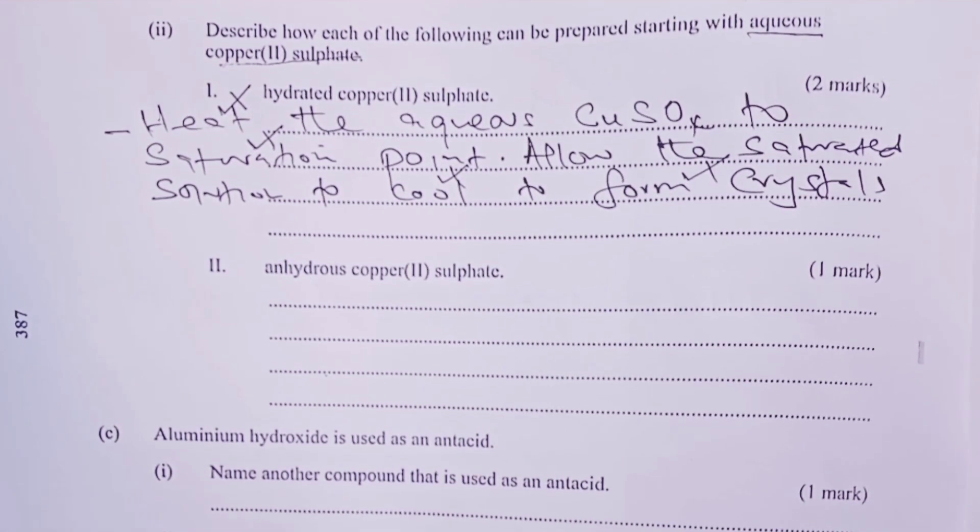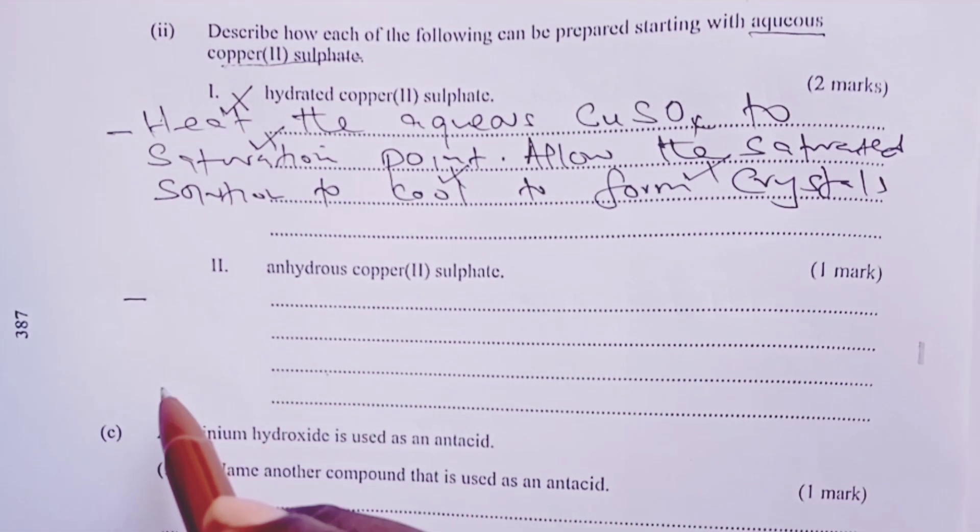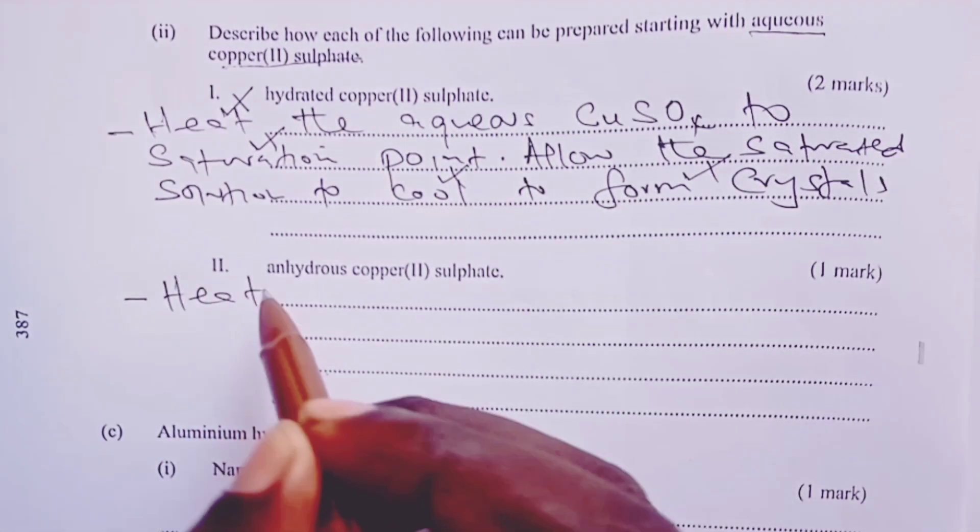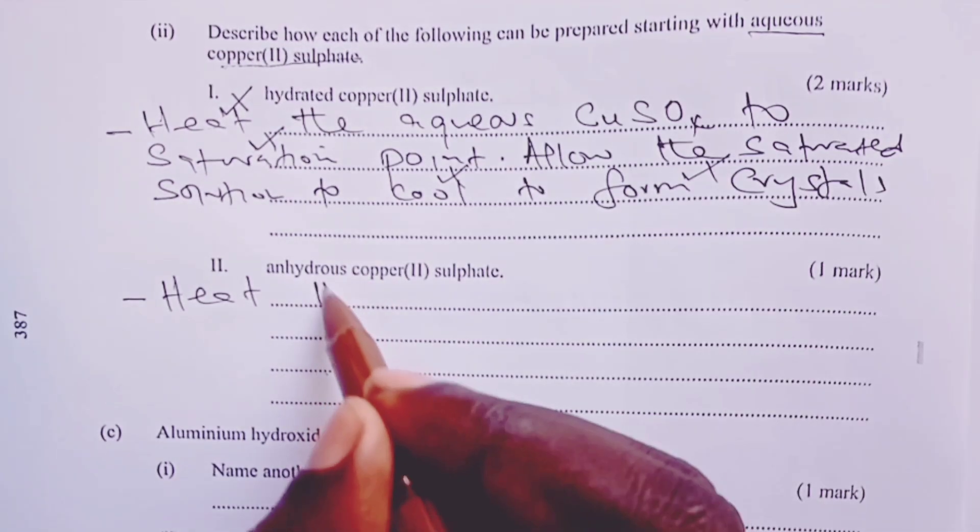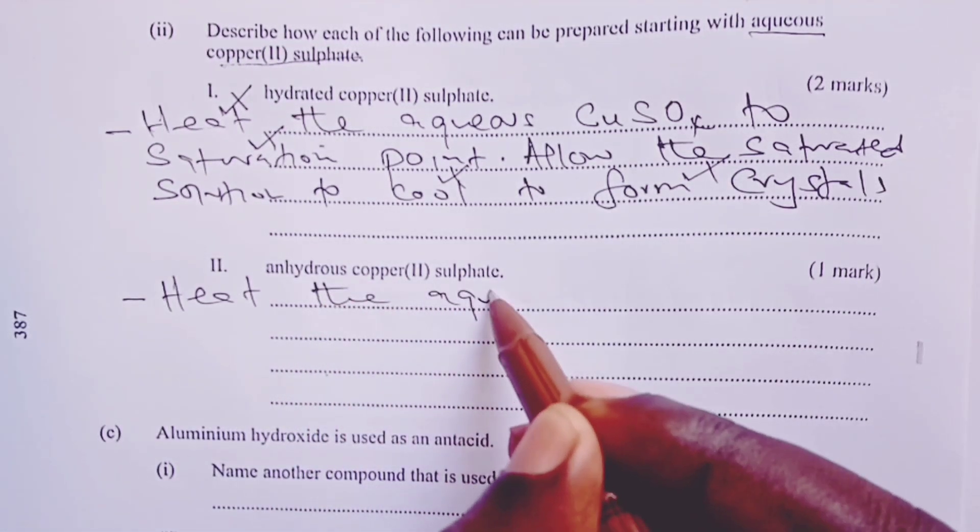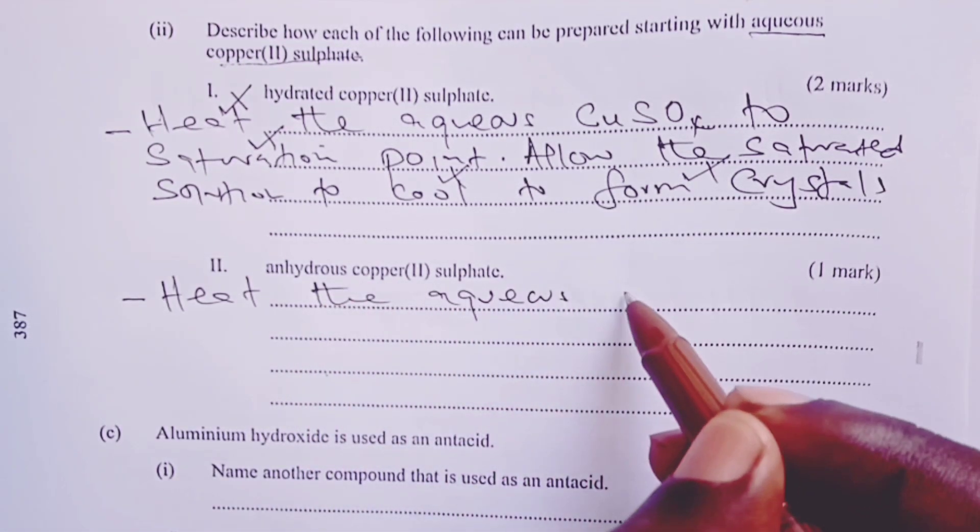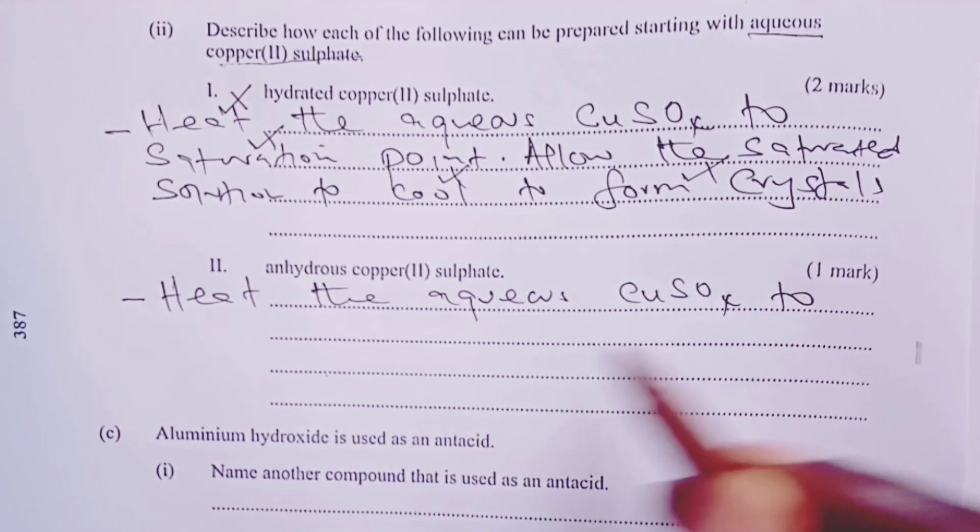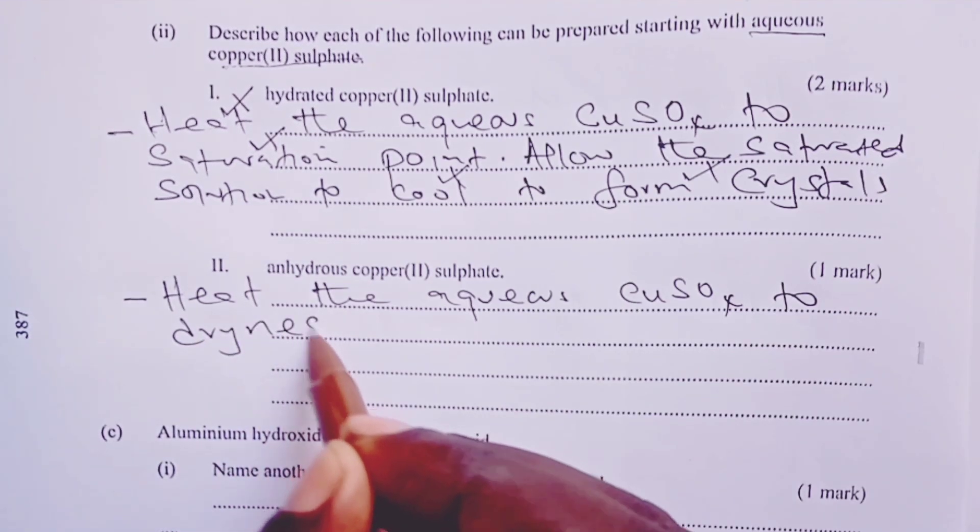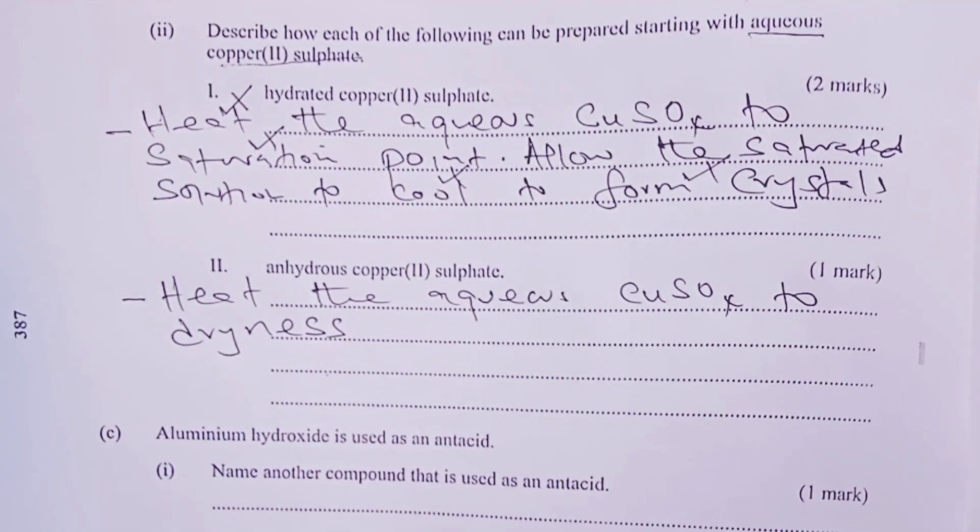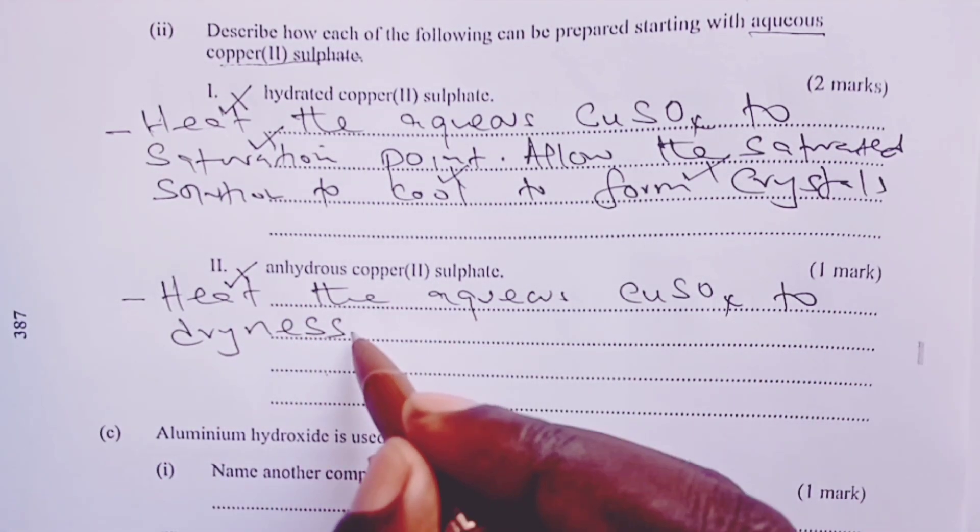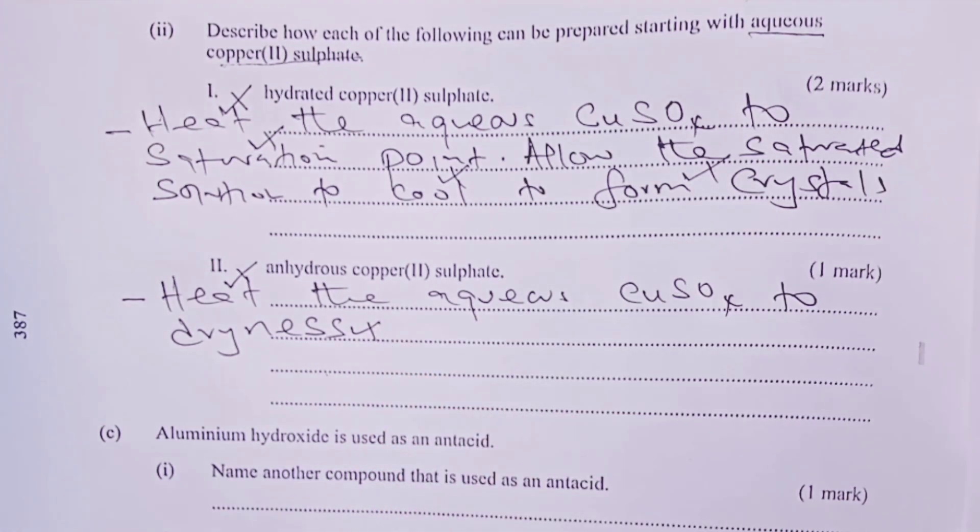How about anhydrous copper(II) sulfate from aqueous copper(II) sulfate? This time round, the answer is simple. We heat the aqueous copper(II) sulfate to dryness. When you do this, we obtain the anhydrous form of our salt. So this time, it's only one mark. A half for heat and a half for dryness.